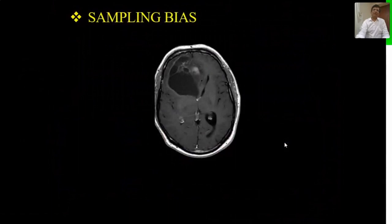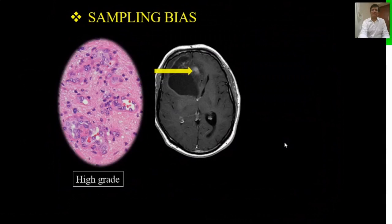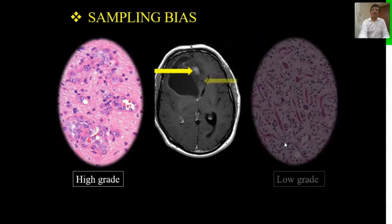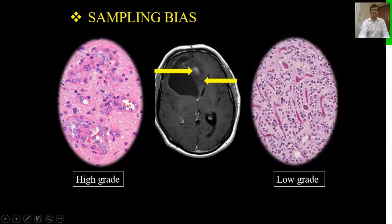One more important consideration is sampling bias. It is our job to tell the neurosurgeon where to biopsy from if he is not going to resect the tumor. For example, in this right frontal lobe tumor, the chance of finding high-grade changes is better in the intensely enhancing area compared to its corpus callosum part, which will show low-grade tumor.